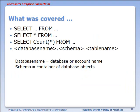To summarize what we've covered in this lesson: the SELECT...FROM statement, SELECT asterisk as a way of seeing all columns from a table, the SELECT COUNT function to display just the number of rows within a table, and how to identify a table in a different database using a different schema with a fully qualified table name.